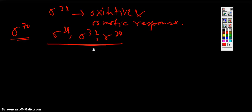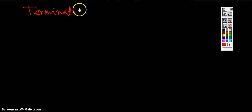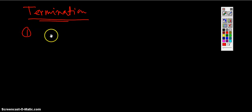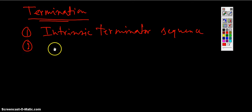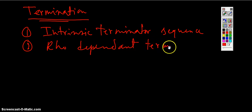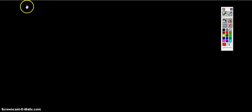Now I will move on to transcription termination. In the termination of transcription, two types of termination can be found. One is with the intrinsic terminator sequence, and the other one is rho protein-dependent termination. Let's start with the first one — intrinsic termination.